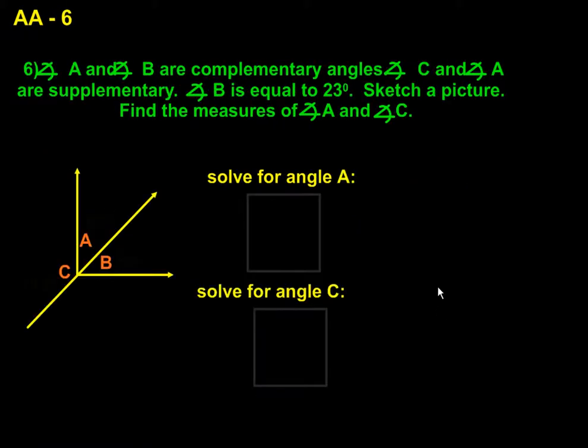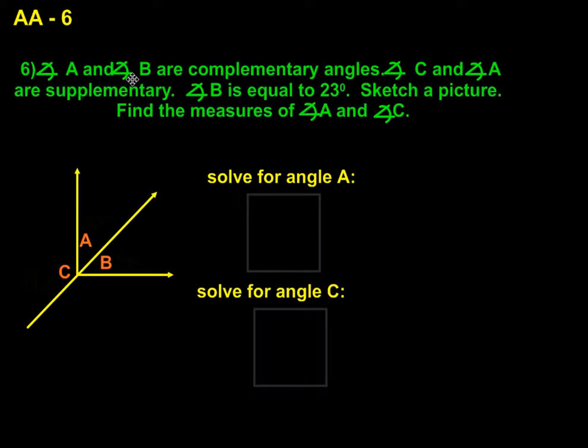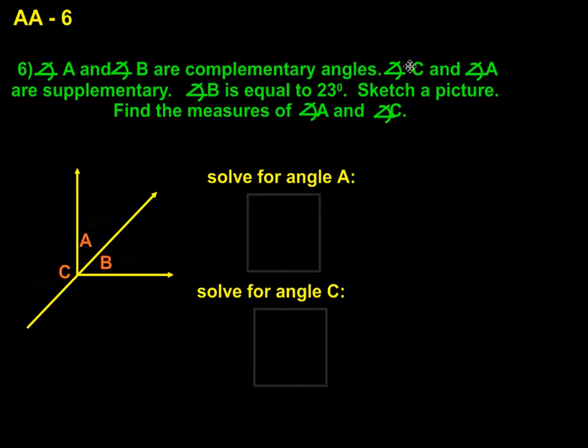And lastly, we have angle A and angle B are complementary angles. Angle C and angle A are supplementary angles, which means together they make 180. The complementary angles, A and B, make 90 degree angle. Angle B is equal to 23 degrees. Sketch a picture. Find the measure of angle A and angle C. Well, here's my picture that I sketched. I started off with my right angle, broke it into two pieces, and made one piece A, one piece B.